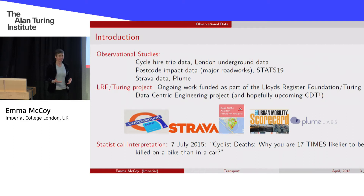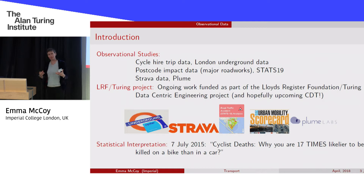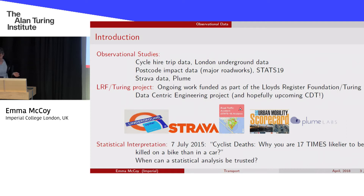Every few years there'll be newspaper articles about how dangerous it is to cycle in London. On the 7th of July 2015 there was this headline about why you are 17 times likelier to be killed on a bike than in a car. It gets me thinking about all these inferences made from observational data — when can we trust this kind of interpretation?